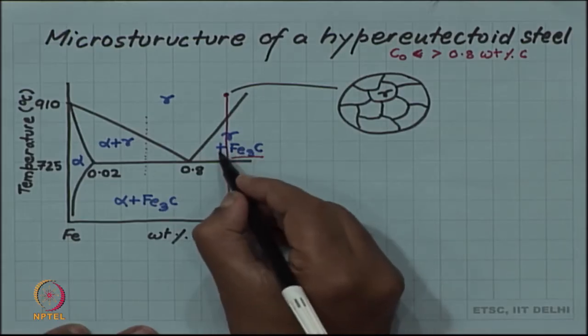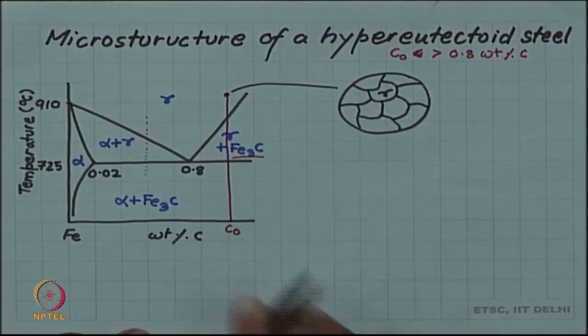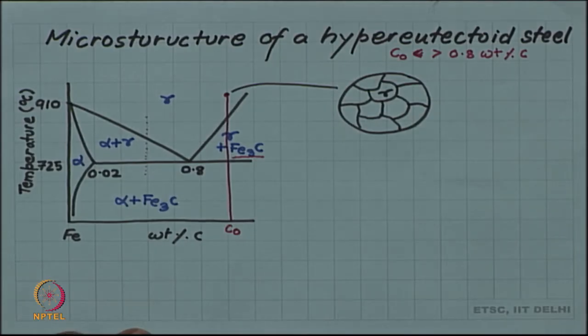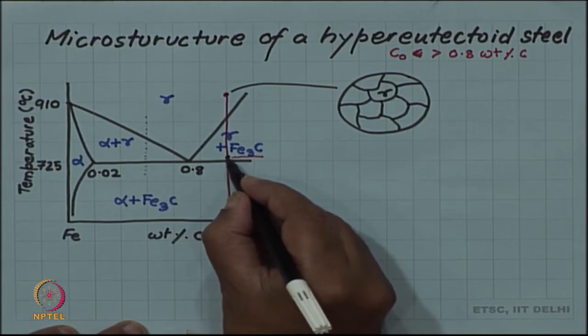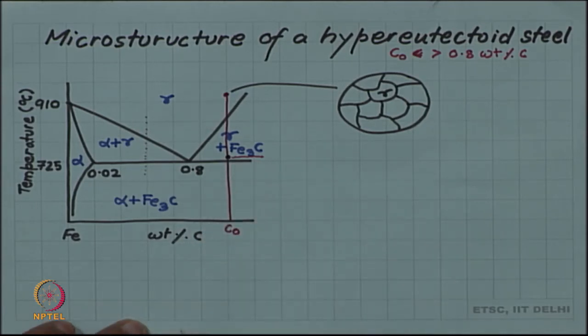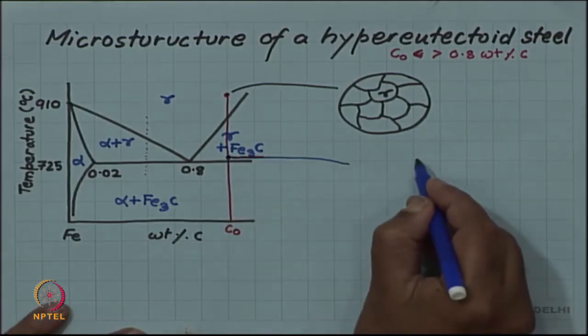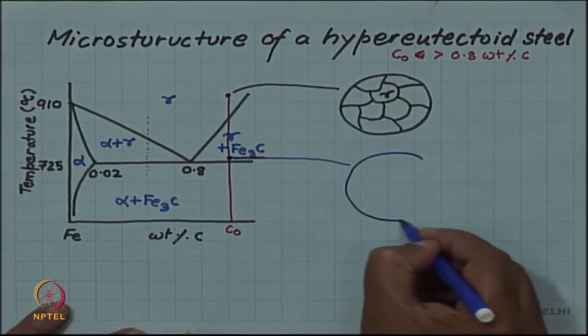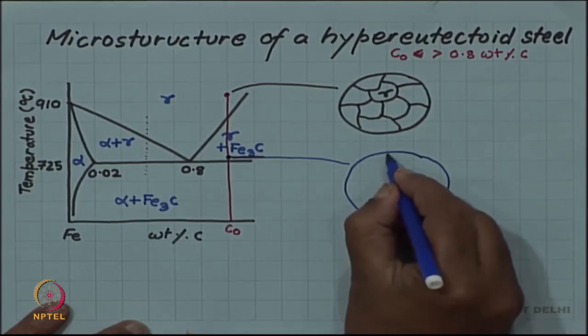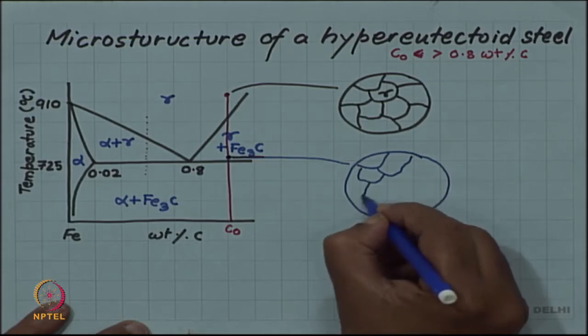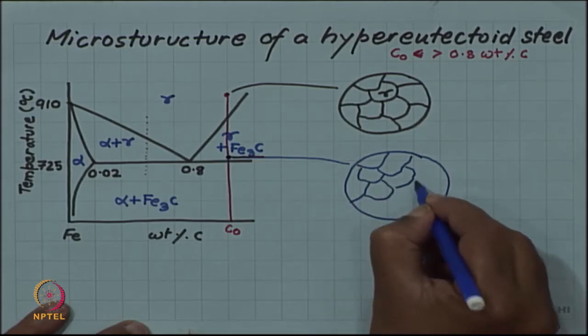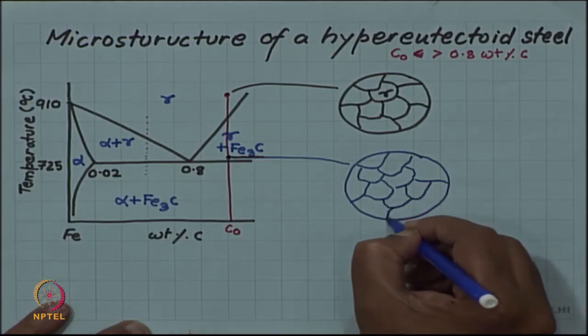But then when you enter this alpha gamma plus Fe3C region, you will start having Fe3C forming at a temperature somewhere there. You have gamma.